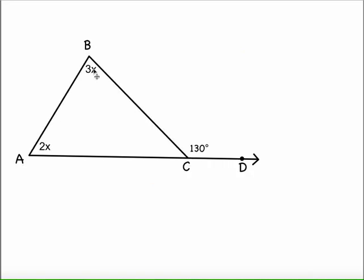So here we have, of course, some algebraic expressions for our angle measures. But again, we have two non-adjacent interior angles and an exterior angle. So 2X plus 3X has to equal 130 degrees.